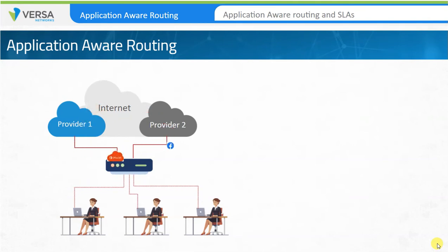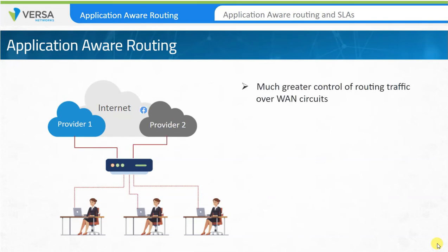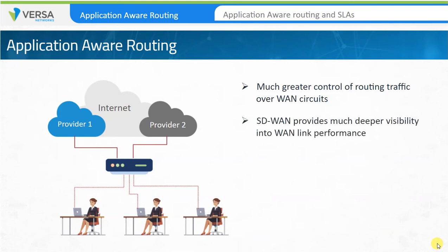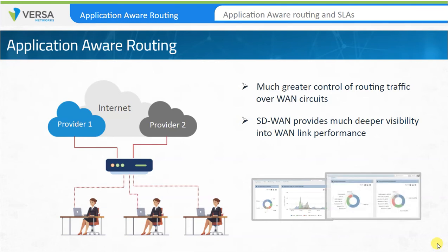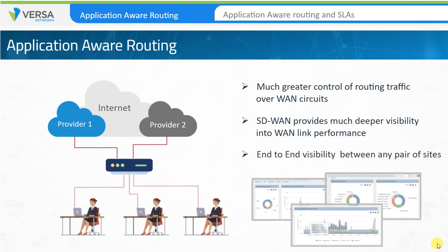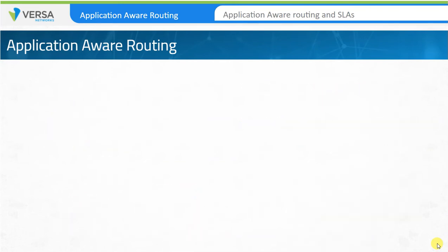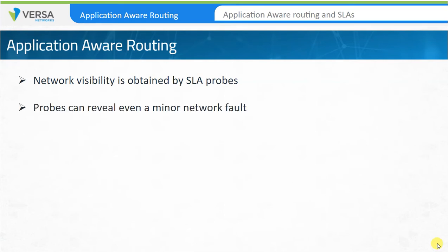Application-aware routing capability in an SD-WAN solution can give much greater control to an organization for routing traffic over WAN circuits. Along with this, SD-WAN also provides much deeper visibility into the performance of WAN links. This visibility is not specific to the last mile of the WAN connection, but end-to-end between any pair of sites. Such detailed visibility is achieved using SLA probes, which can reveal even a minor fault in a circuit.